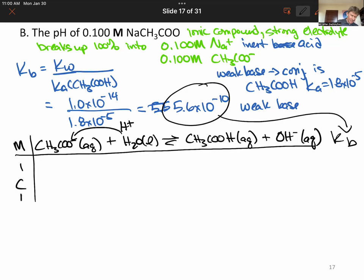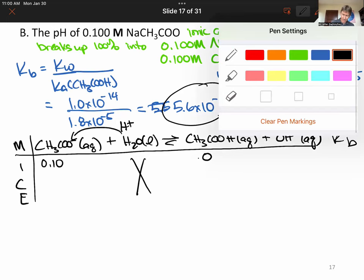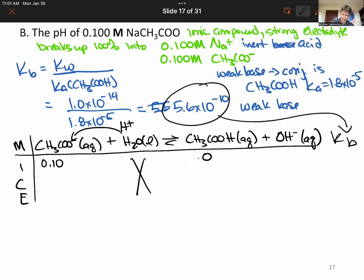This is going to be a molarity ice table where we have 0.10 molar acetate. We don't care about the water. We have 0 acetic acid when we start, and approximately 0 hydroxide. Subtract X. Add X. Add X.